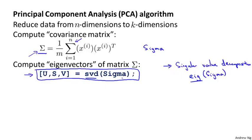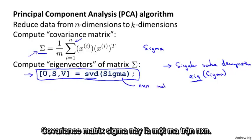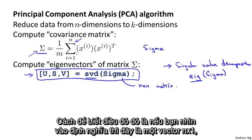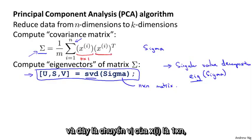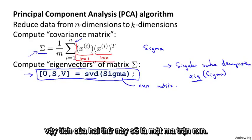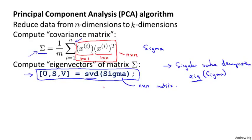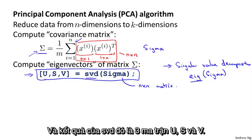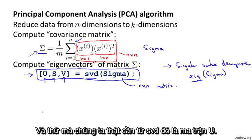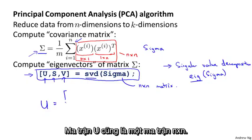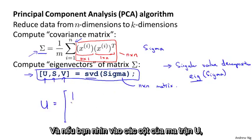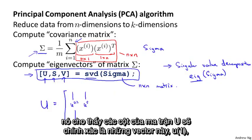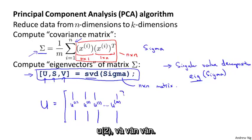To fill in some more details: this covariance matrix sigma will be an n by n matrix. One way to see that is if xi is an n by 1 vector, then xi transpose is 1 by n, and the product of these two things is an n by n matrix. What the SVD outputs is three matrices — U, S, and V — and the thing we really need is the U matrix, which will also be an n by n matrix. The columns of the U matrix will be exactly those vectors u1, u2, and so on that we want.